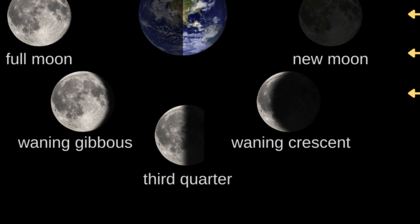Last quarter, also known as the third quarter. This phase occurs when the moon has completed three quarters of its orbit. We see half of the moon's face illuminated, but the opposite side from the first quarter.